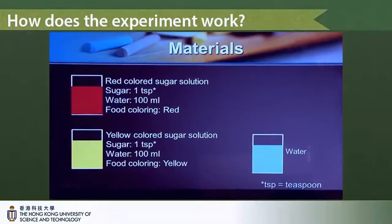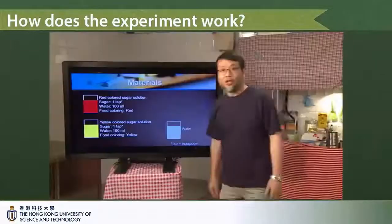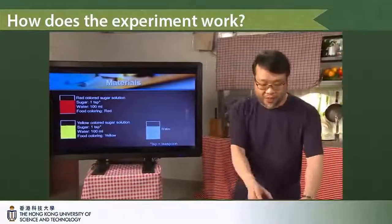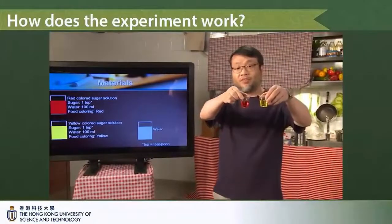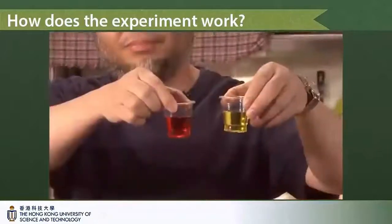And in both cases we put the same amount, one teaspoon of sugar. So as a result, what we have is that we have prepared two solutions, one of them being yellow and the other one being red.